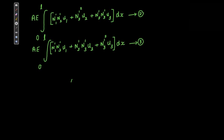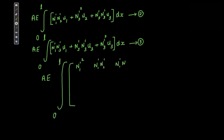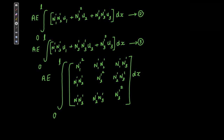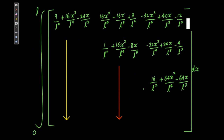Now all I have to do is write the three equations in matrix form. Writing them as a matrix, note that this is a symmetric matrix — the first row is the same as the first column, the second row is the same as the second column. We then integrate this matrix expression. If you substitute the values of N1'², N1'·N2', N1'·N3', and so on, you will get a large matrix with integrals. Integrating and substituting the limits gives you the stiffness matrix.